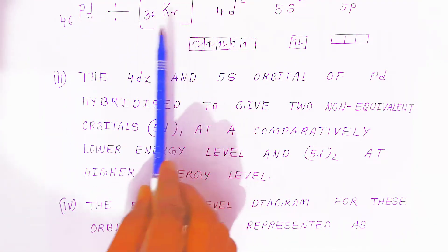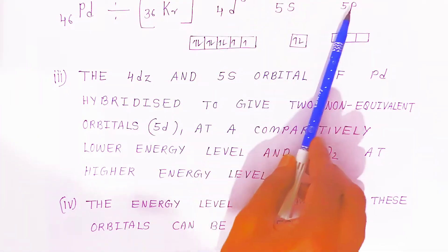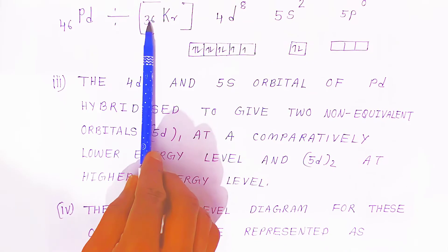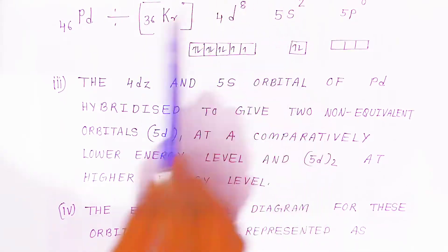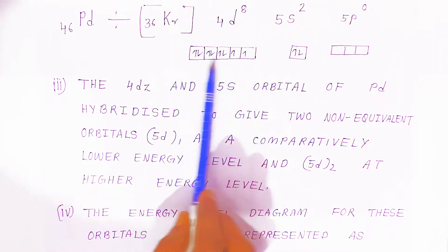In abbreviated form, it is [Kr] 36, now 4d⁸ 5s² and 5p⁰. So 36 is krypton, 8 plus 2 equals 10, making it 46. That is 4d⁸ and 5s². Now 8 electrons are distributed like this in the d orbitals.